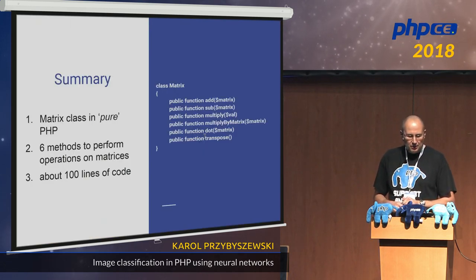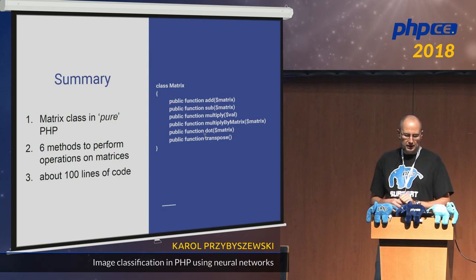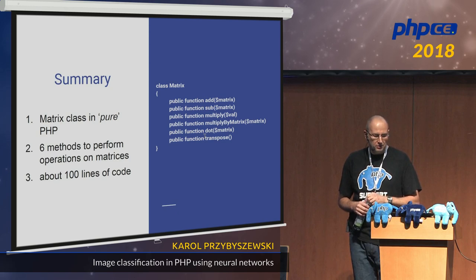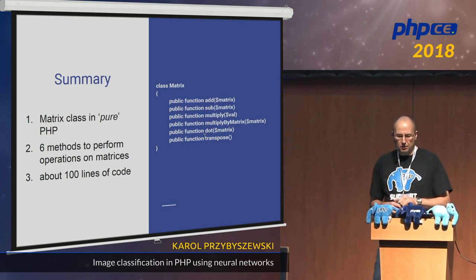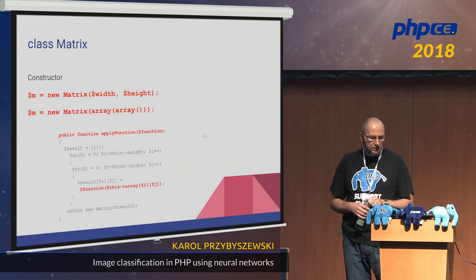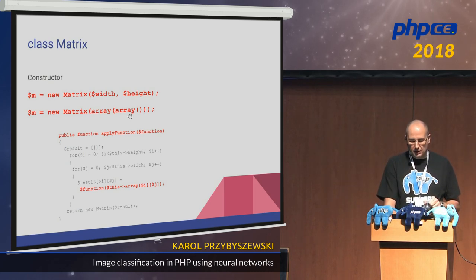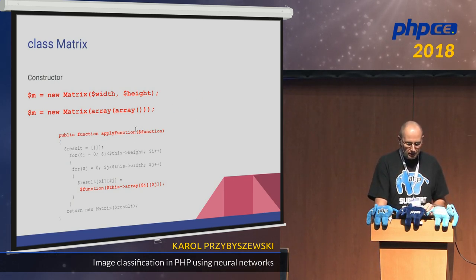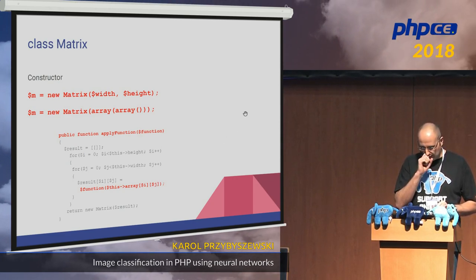To summarize, we have a Matrix class in pure PHP with six methods to perform operations on matrices — it's about 100 lines of code. We have: add to add matrices, sub to subtract, multiply to multiply by a scalar, dot product for matrix multiplication, and transpose. The constructor can accept width and height (rows and columns) or an array of arrays. There's also a useful method called apply function, which applies a function to every single element of the matrix.